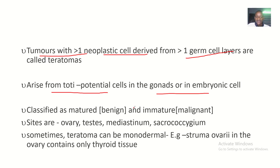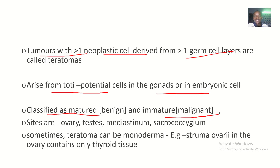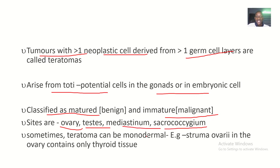Teratomas can be classified as mature — that's benign — or immature — that's malignant. Immature cancer is where cells revert back to embryonic-type cells; the mature cells have gone back to being immature. Common sites for teratomas include the ovaries, the testes, the mediastinum, and the sacrococcygeal region.